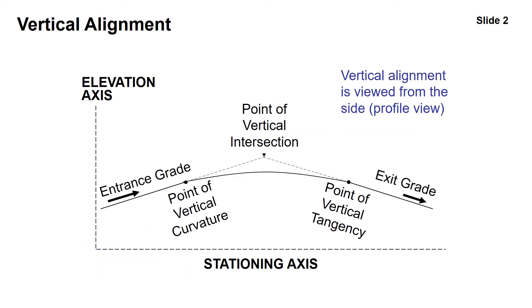Vertical alignment is viewed from the side, which is known as the profile view. The point of vertical intersection is where the two grades come together. The assumed shape of a vertical curve is a symmetric parabolic curve, and the point where the curve leaves the entrance grade is the point of vertical curvature, and where it returns to the grade, known as the exit grade, is the point of vertical tangency.